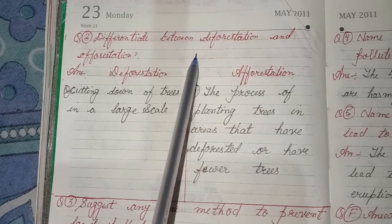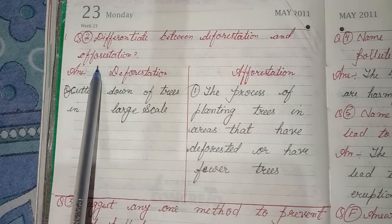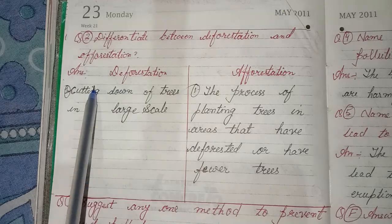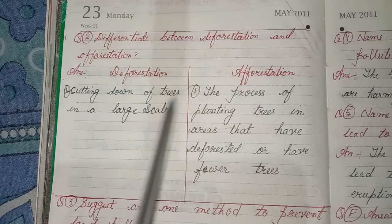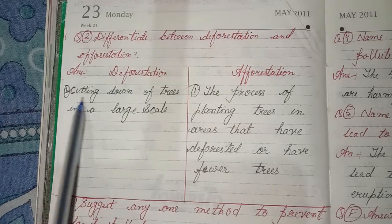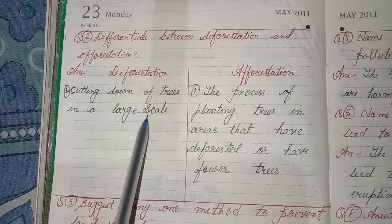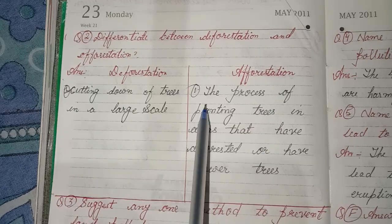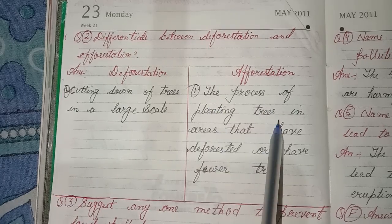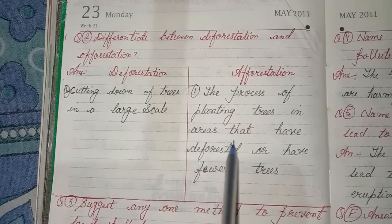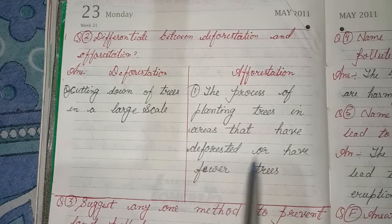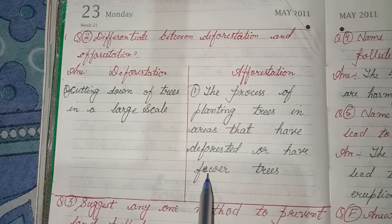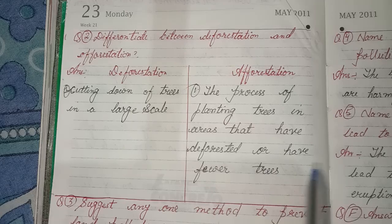Second question: Differentiate between deforestation and afforestation. Deforestation: cutting down of trees on a large scale. Afforestation: the process of planting trees in areas that have had deforestation or have fewer trees.